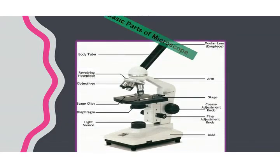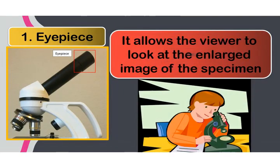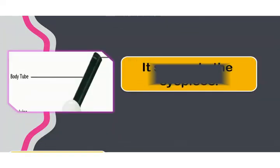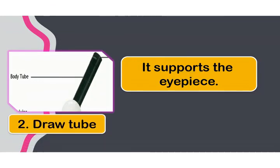First, the eyepiece, also known as the ocular lens. The eyepiece allows the viewer to look at the enlarged image of the specimen. Next, the draw tube. The main function of the draw tube is to support the eyepiece.